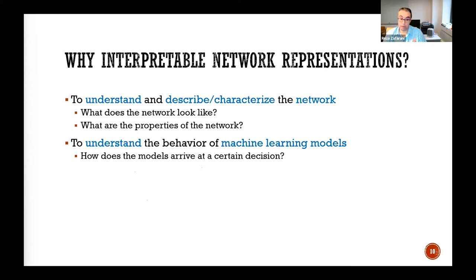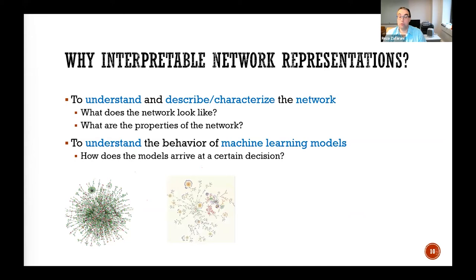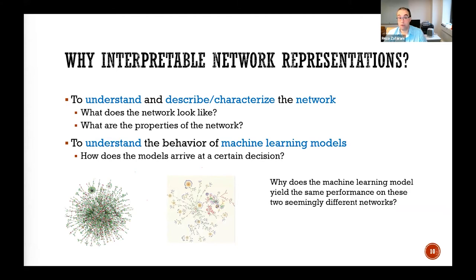Say you have a graph on the left and a graph on the right. You give both to a machine learning model and it gives you the same performance results. You want to know why these two seemingly different graphs give the same result. If you had a representation that outputs X for both networks, you would say they match on this X, so maybe that's the correlation explaining why you get the same result.